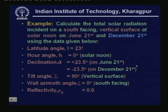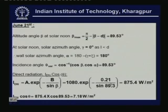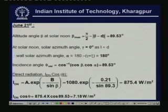The reflectivity of the ground is given as 0.6. Based on this information we will calculate the total solar radiation. Here a stepwise procedure is shown. First we find the altitude angle beta.